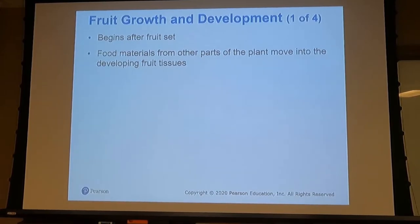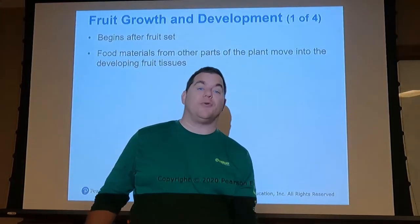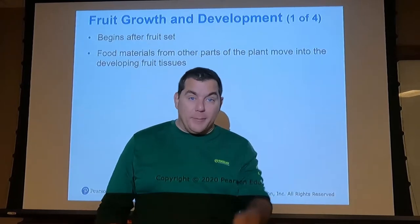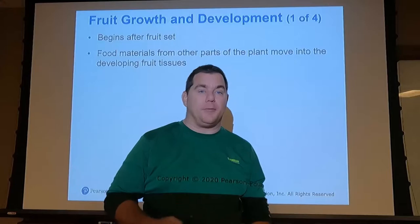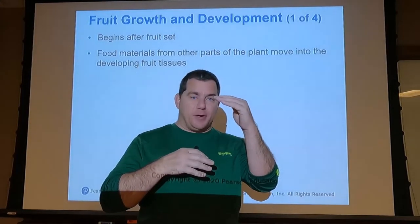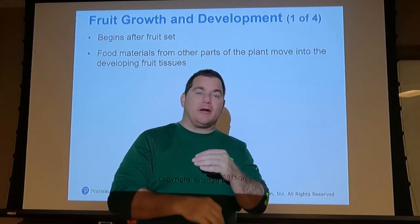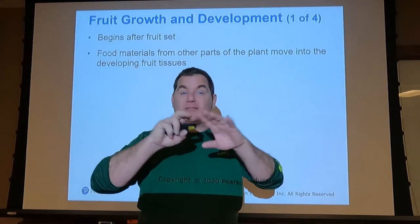After fruit set, food materials from other parts begin to move into the developing fruit tissues. Xylem brings nutrients from the ground to the leaves for photosynthesis; those photosynthates travel back down to the roots. When the plant switches from vegetative production to maturity and fruit production, not all photosynthates go back to the roots — some are distributed throughout the plant to those fruits.